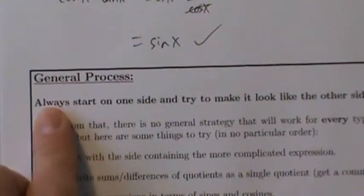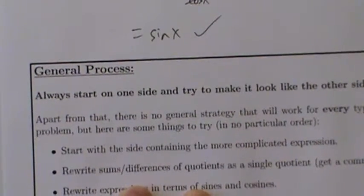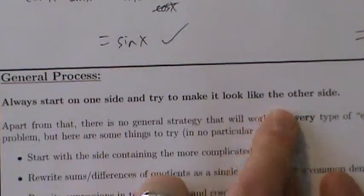So let's look at the general process. Unfortunately, with trig identities there's not really a specific set of rules that will work every single time. But there are some general steps you can take in no particular order. The one thing you're always going to do: always start on just one side and try to make it look like the other side. Don't manipulate both sides. When solving an equation you do things to both sides, but for trig identities you only work on one side.